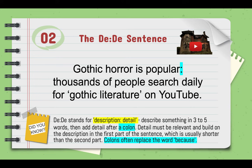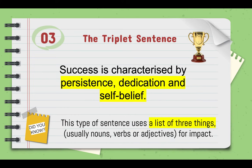The triplet sentence uses a list of three things — usually nouns, verbs, or adjectives — for impact. This is a really popular technique in advertising and persuasive writing in general, and it's an easy way to spice up your writing. For example: 'Success is characterized by persistence, dedication, and self-belief.' Those three abstract nouns form the triplet.